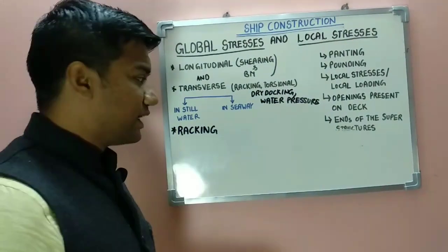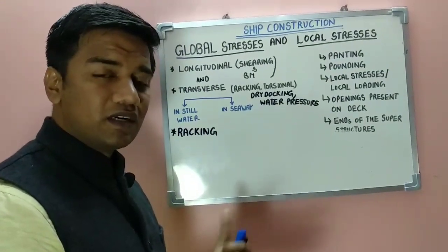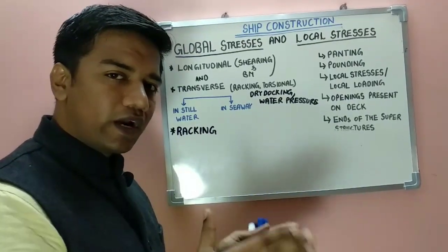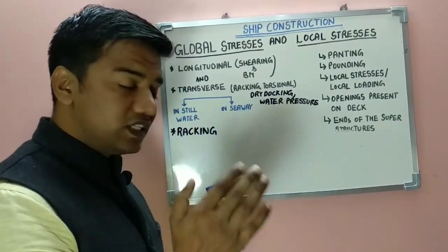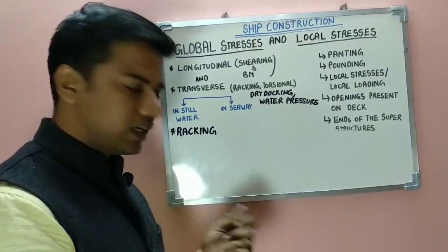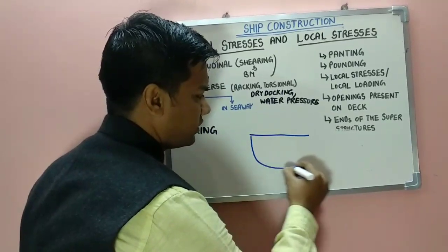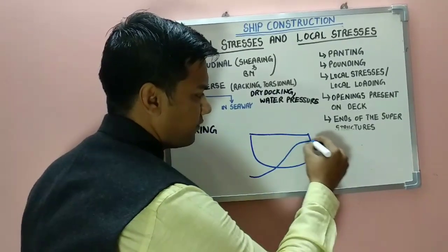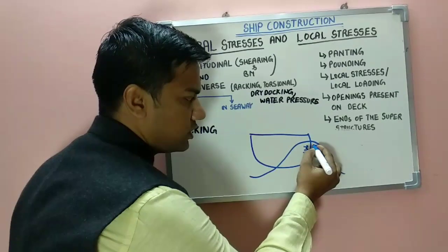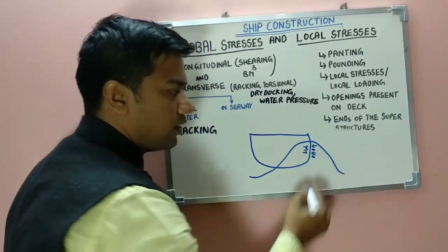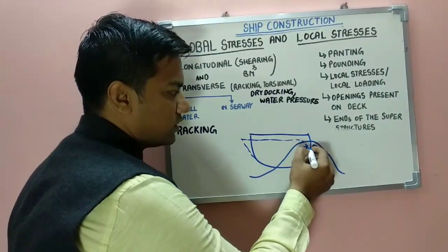Our next topic is raking stress. Raking stress occurs when the ship is rolling, so it also comes under dynamic stresses. When the ship is rolling, acceleration and deceleration due to the waves occurs, which tends to distort the side shell plating in the transverse direction. This distortion of the side shell plating in the transverse direction is called raking.